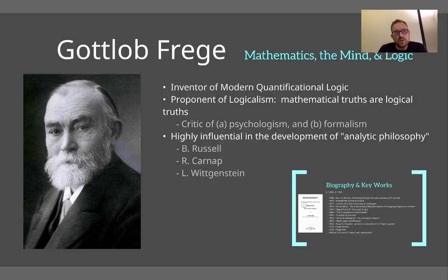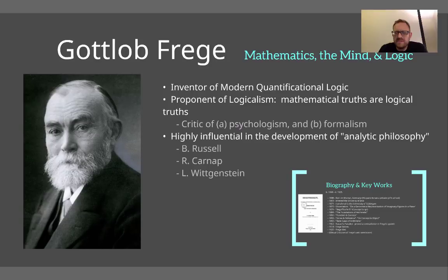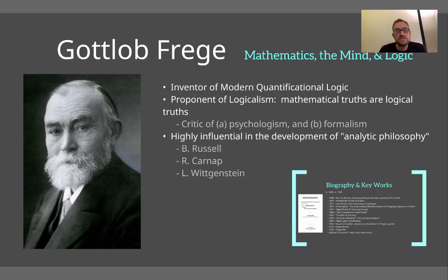Gottlob Frege is very important in terms of the philosophy of mathematics, the philosophy of mind and logic. He was actually a mathematician initially, but ultimately his work extends to almost all the domains of philosophical work. Number one, he was the inventor of modern quantificational logic. He's also a famous proponent of logicalism — the idea that mathematical truths are ultimately at root logical truths. So there's a great debate in the late 19th century within the history of mathematics and philosophy of mathematics about whether mathematics and logic are doing the same thing.